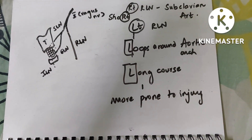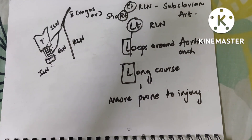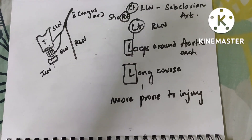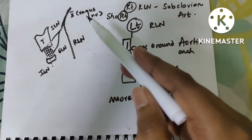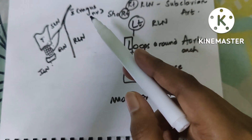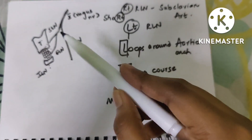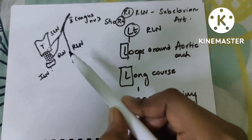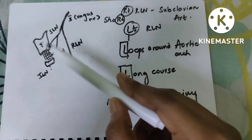Let us learn about the larynx, its nerve supply, and the muscles involved. The vagus nerve, the 10th nerve, supplies the larynx and divides into the superior laryngeal nerve and the recurrent laryngeal nerve.